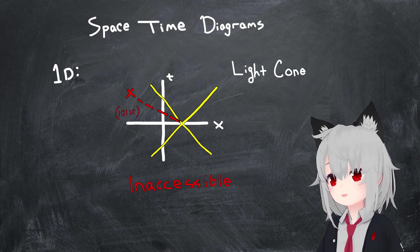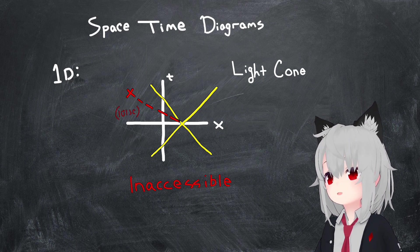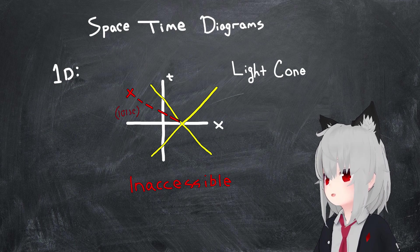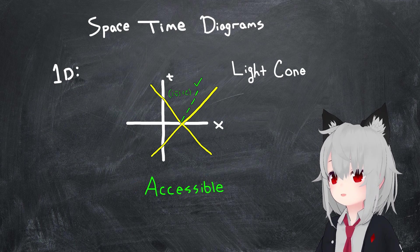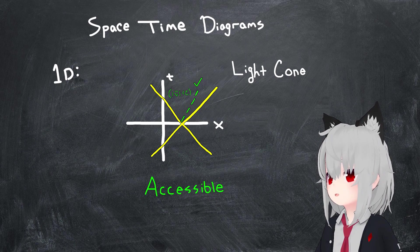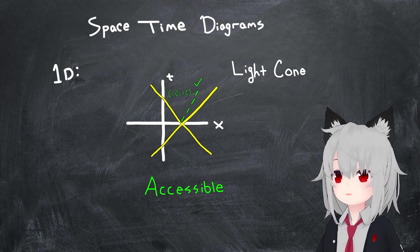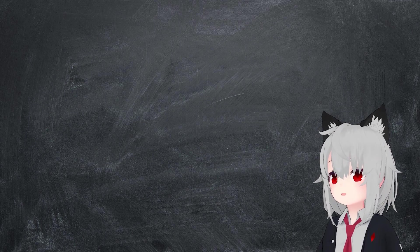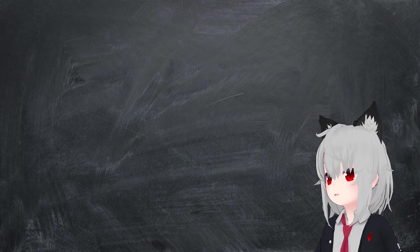For example, an event which lies outside the light cone would actually be inaccessible, since it would require a speed faster than the speed of light to observe. On the other hand, all events which lie inside this light cone could always in principle be observed, even if you need to travel near the speed of light to do so. Okay, so this is a pretty interesting way to think about events in spacetime.